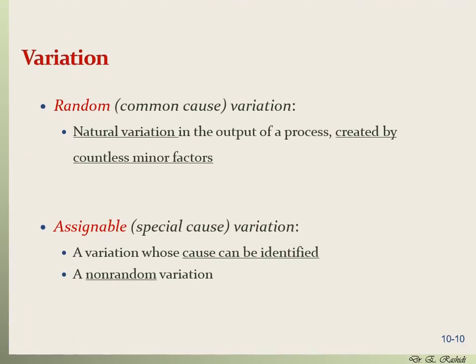There are two types of variation. Random variation, also called common cause variation, is natural variation present in every process — created by countless minor factors we cannot control. Assignable variation, also called special cause variation, is variation whose source we can actually identify and probably fix. Assignable variation is non-random and unnatural variation.